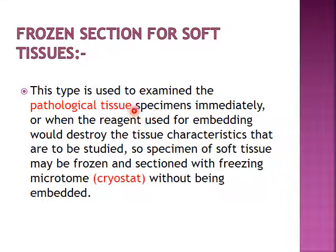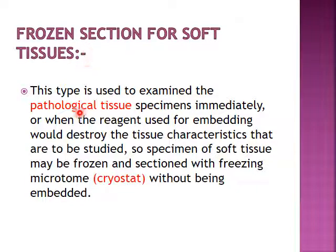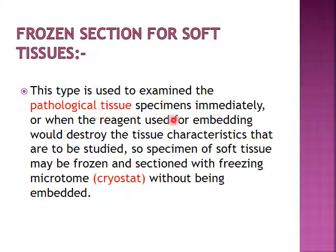The last technique is the frozen section for soft tissue. This type is used to examine pathological tissue specimens immediately — for example, during an operation when a biopsy is taken and we need to study the tissue immediately to determine if it is malignant or benign. The tissue is frozen and then cut with a freezing microtome — a special type called a cryostat — without being embedded inside a paraffin block. This is used for pathological tissue, not for normal oral tissue.